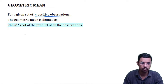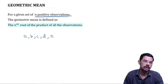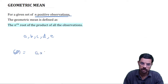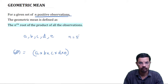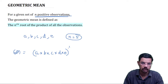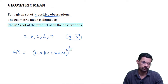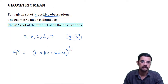Suppose if you have 5 observations A, B, C, D and E, then to find the geometric mean, we multiply all the observations — A into B into C into D into E — and then take the nth root. Here n is equal to 5, so we take the fifth root, and what we get is the geometric mean of A, B, C, D and E.